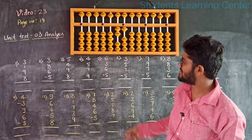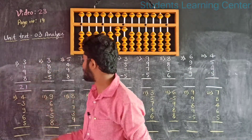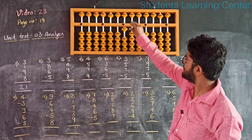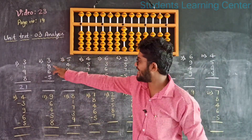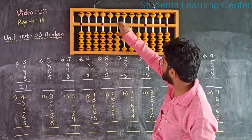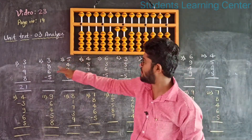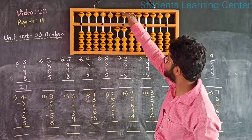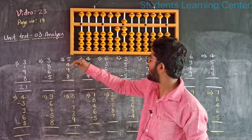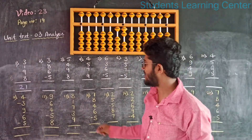The answer is 21. Next question. Add 3, add 8, add 10 less 2. Add 6 — 5 plus 1 is 6. Less 5. Answer is 12.